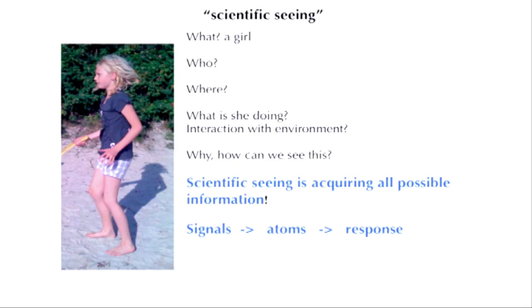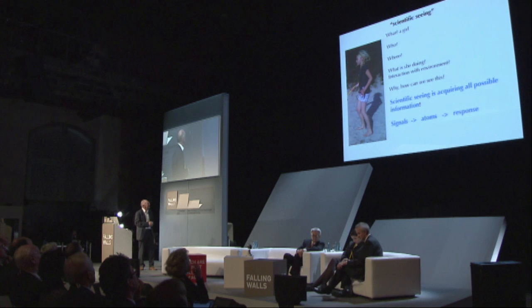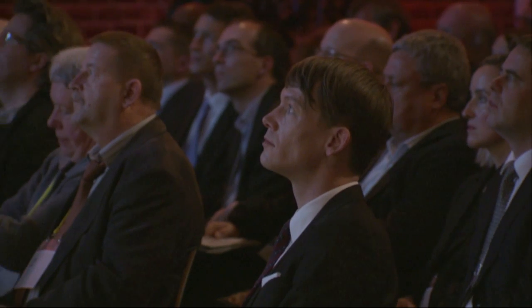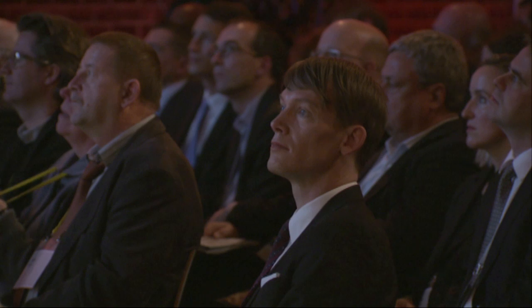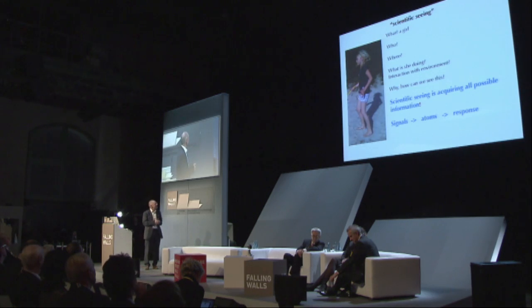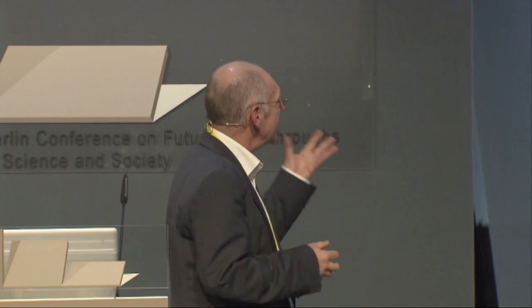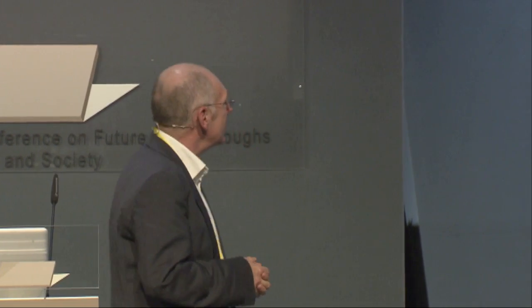To explain my point, I show you this picture of a girl. The only thing we know is what we see — the girl. But we don't have any other information to know who she is, what she is precisely doing, and what her interaction with the environment is. So we need more signals to learn more. This is the same with atoms — we need more excitation signals to speak to atoms and see how they respond. That is precisely what I want to show you today.